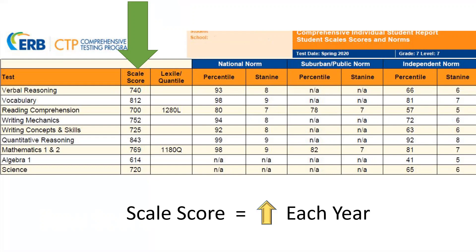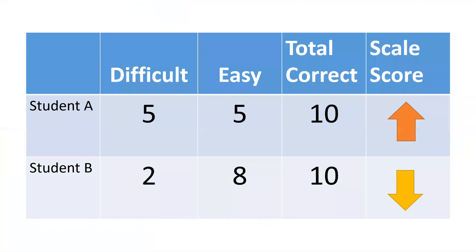Let's look at an example of how the scale score is calculated. In this example, Student A correctly answered five difficult questions and five easy questions. Student B correctly answered two difficult questions and eight easy questions. Even though they both correctly answered 10 questions, Student A's scale score will be higher than Student B's because Student A correctly answered more of the difficult questions.